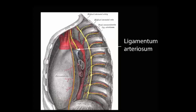Beyond that point, the descending aorta gives off branches between each subcostal level, and also small branches from those penetrate the vertebra and join into the spinal canal, providing additional blood supply to the spinal cord. There's one particularly large branch of this, which is often at around T8, T9.